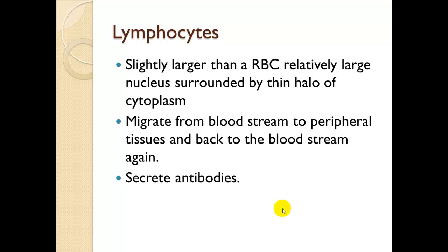Lymphocytes are slightly larger than a red blood cell, with a relatively large nucleus surrounded by a thin halo of cytoplasm. They migrate from the bloodstream to peripheral tissues and back again through diapedesis. They can secrete antibodies, which means you can easily initiate an antibody-antigen reaction directly from the cell.